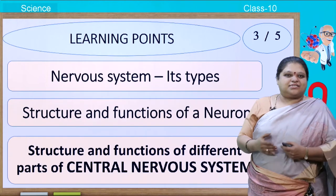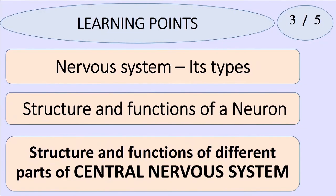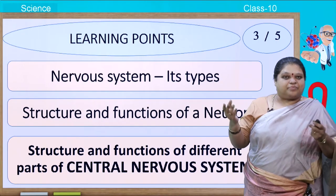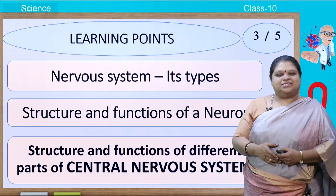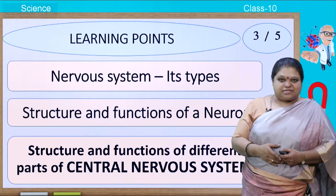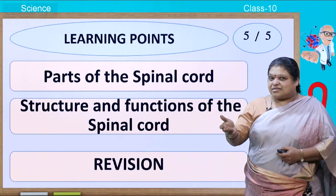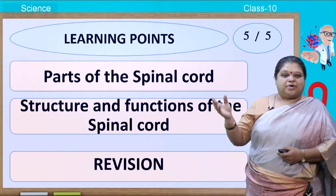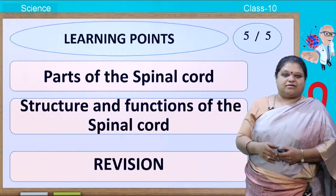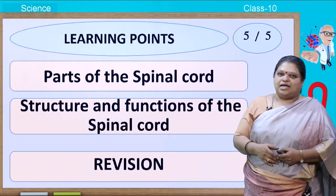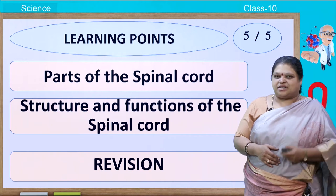In the third session we studied about the nervous system, its types, structure and functions of a neuron, and also structure and functions of different parts of the central nervous system. In the next session we will be studying about parts of the spinal cord, structure and function of the spinal cord, and most importantly, revision.